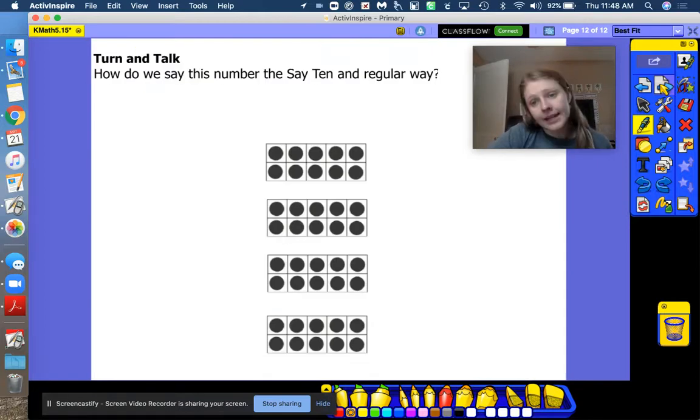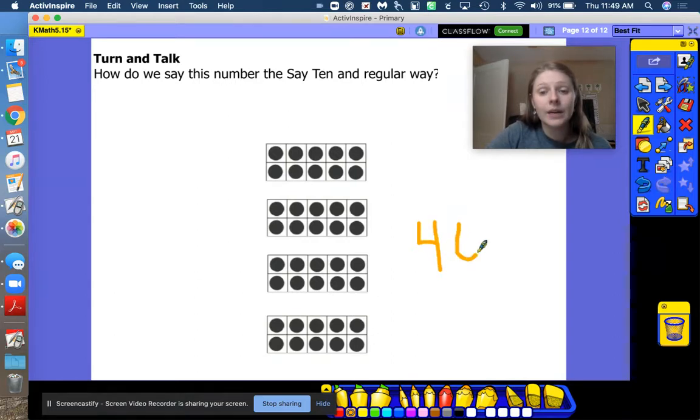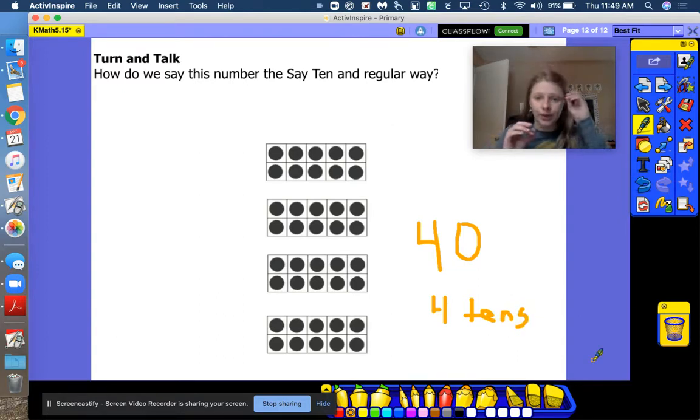All right, friends, how would we say this the say ten way and the regular way? Last problem. You've got this. How many do I have? Good. If you're counting the say ten way, you're on the right track. Ten, twenty, thirty, forty. So we're going to write forty with me. Ready? Down, across, down, some more. That's the way to make a four. And then we're going to write a zero. Four zero is forty dots. And we say four tens. I have four filled ten frames. I have forty.